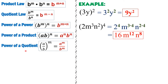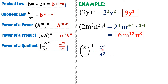For power of a quotient, same as power of a product — distribute the exponent outside to each term. For example, x over 4 inside parentheses raised to 3: x must have the exponent 3, and the denominator 4 must also have the exponent 3. Simplifying: x cubed remains x cubed, and 4 cubed equals 4 times 4 times 4, which is 64. So the answer is x cubed over 64.